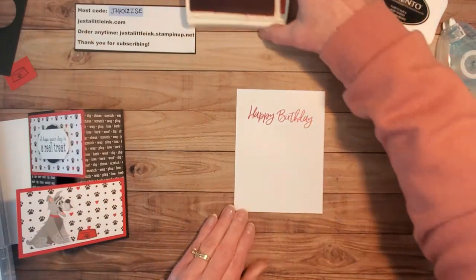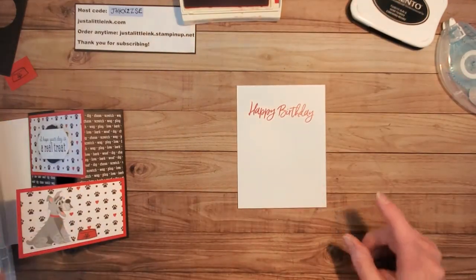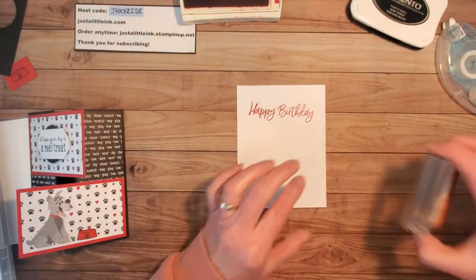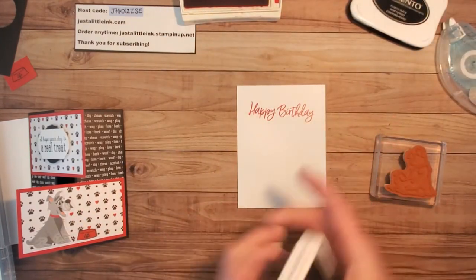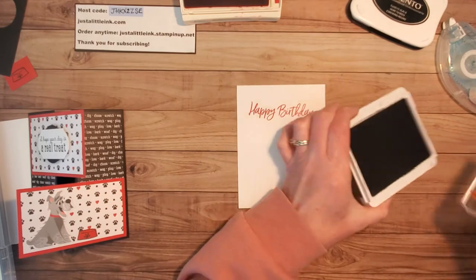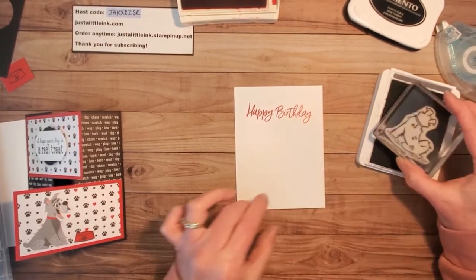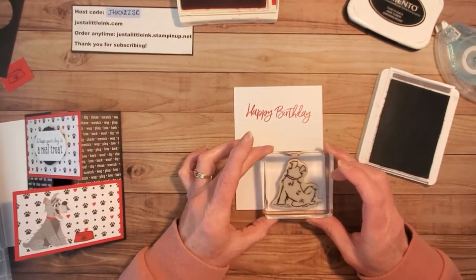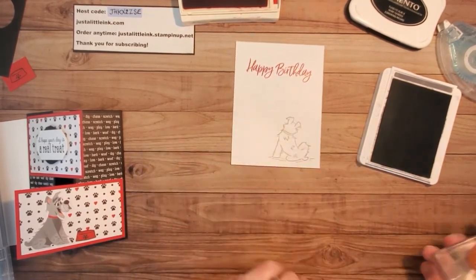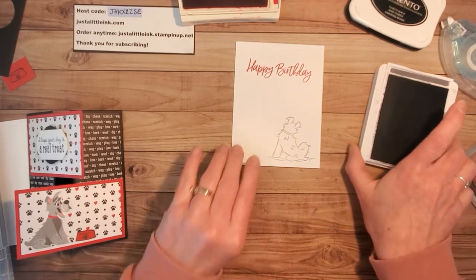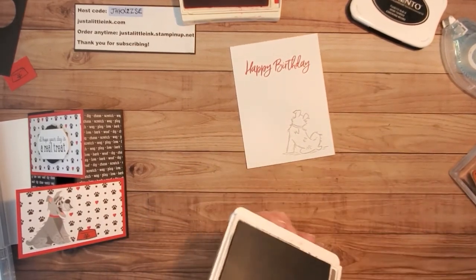And then I want to put the little sitting dog. So one of the options would be if you want a simple option, I'm using some basic gray and you can then stamp him here, leave it like this and not do anything more. That would make a really cute inside.